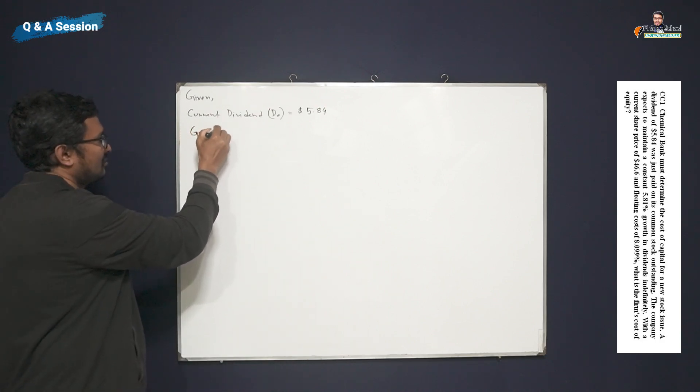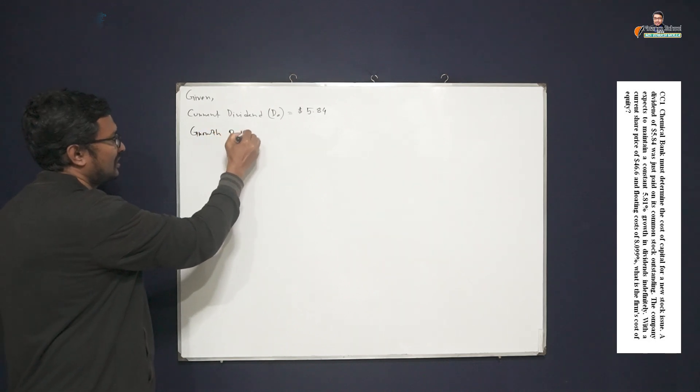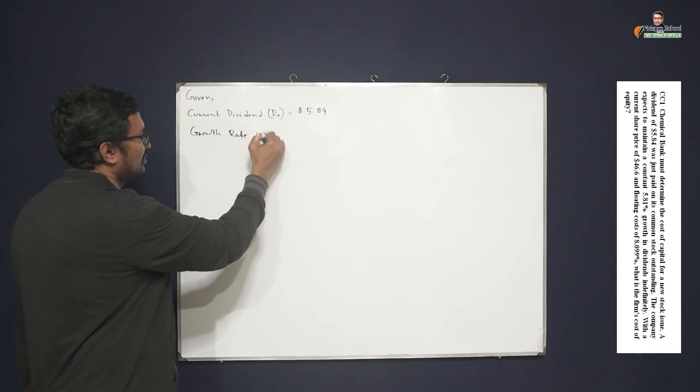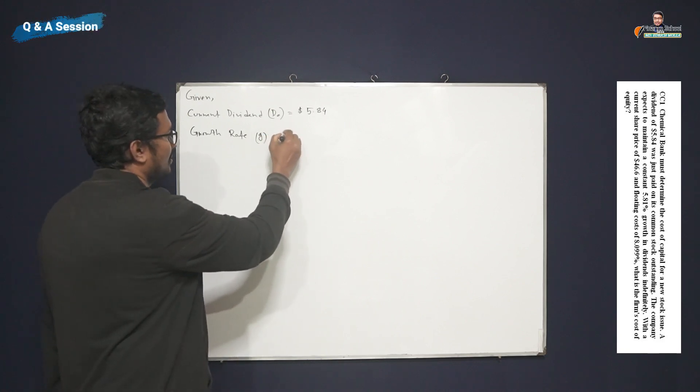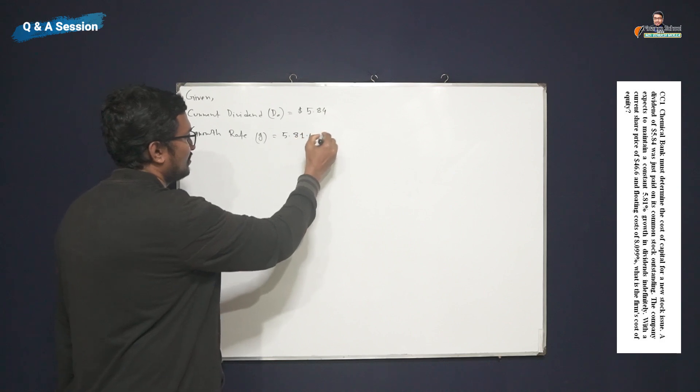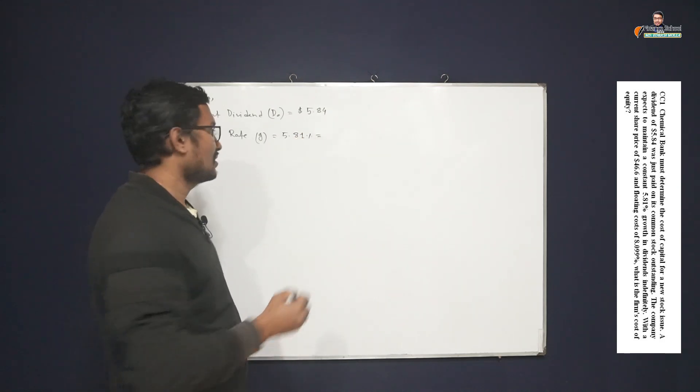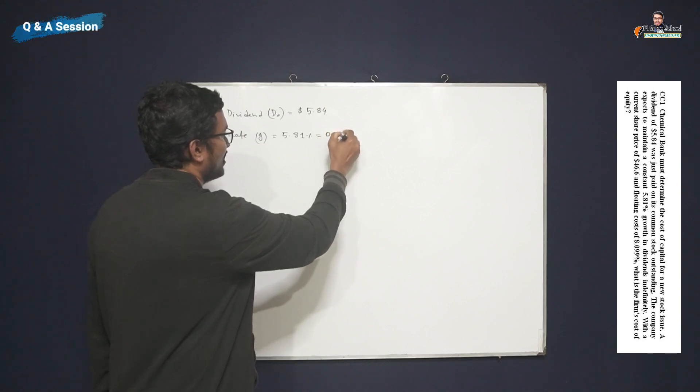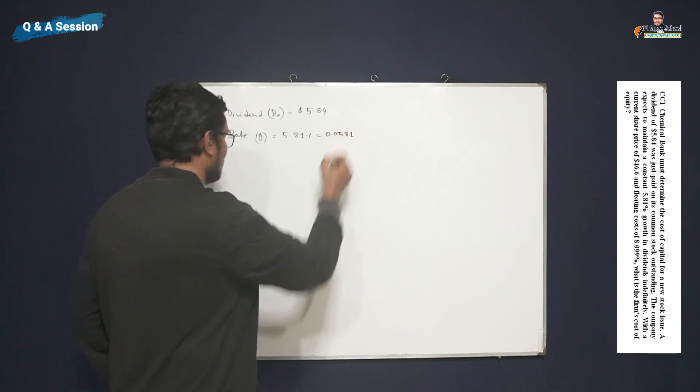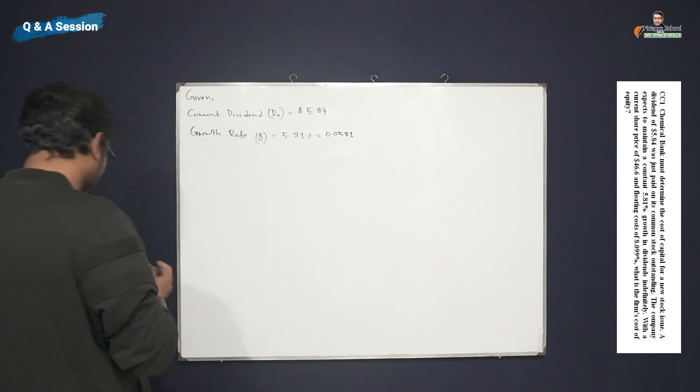So if we convert it into decimal, then we will get 0.0581. So 0.0581 is our constant growth rate.